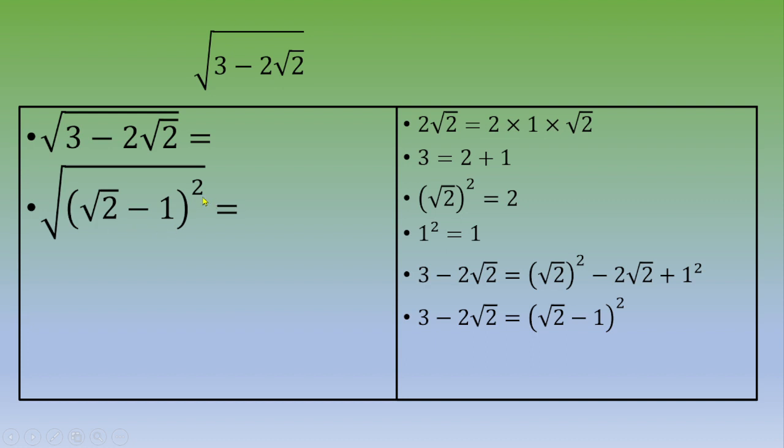Now you check and verify that square root of 2 minus 1 is not a negative quantity. So then the answer is square root of 2 minus 1.